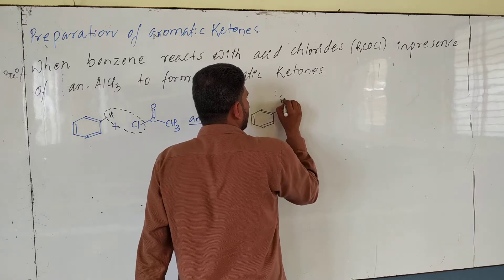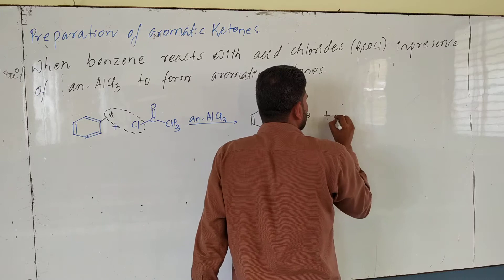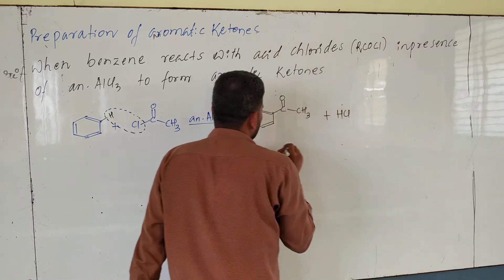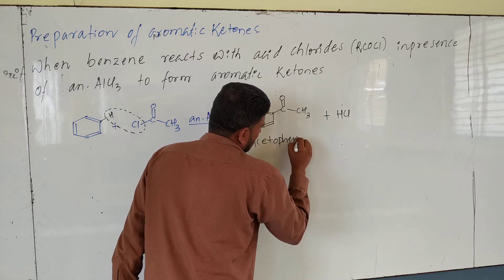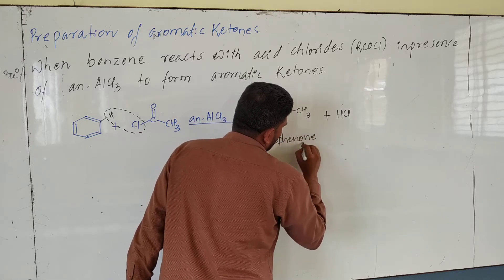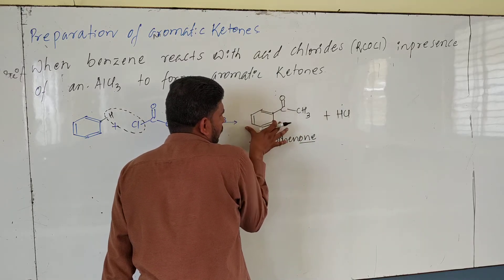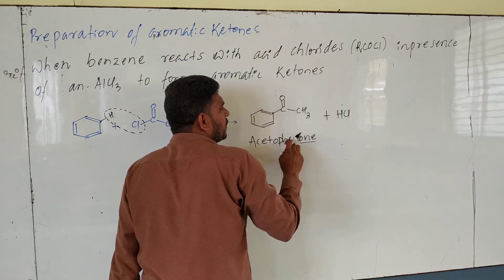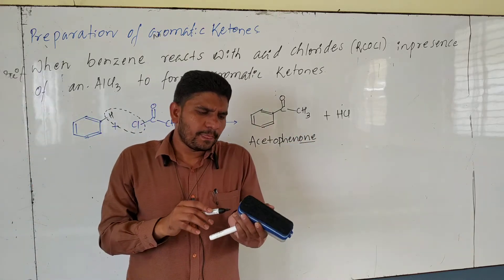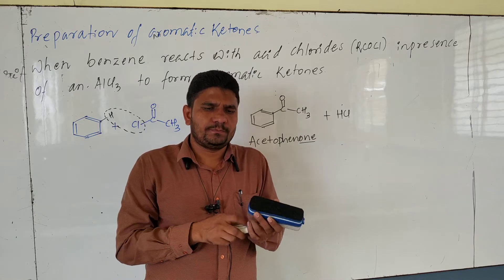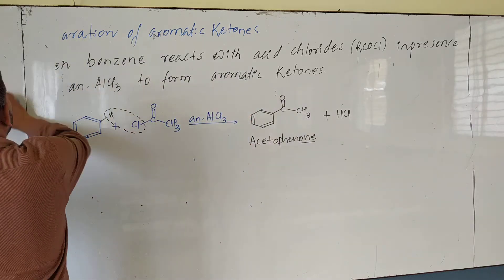Benzene reacts with acetyl chloride (CH3COCl) in the presence of anhydrous AlCl3. HCl is removed, and the product formed is C=O with CH3 attached to the benzene ring, plus HCl as a byproduct. This compound is known as acetophenone — it has a phenyl ring (phenyl group), and as you know, the suffix used for ketones is '-one'.